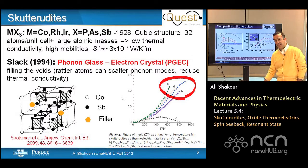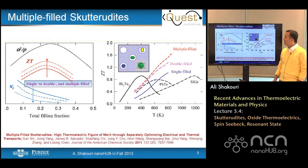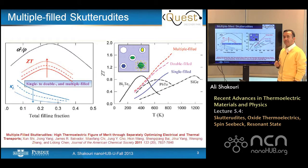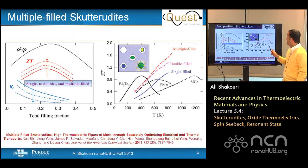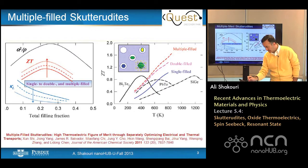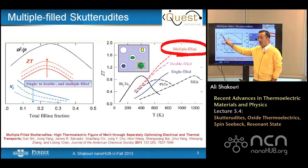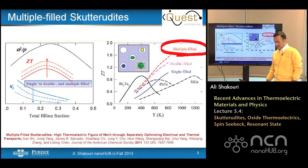Recent advances in skutterudites involve multiple-filled skutterudites — work by a group at GM, Jihui Yang at University of Washington, and Li Dong Chen. By putting different types of filler atoms inside the open fillings in the skutterudite lattice, they improved ZT from 1.3 up to about 1.6. The simple idea is that multiple fillings reduce lattice thermal conductivity without changing the power factor, which increases ZT.